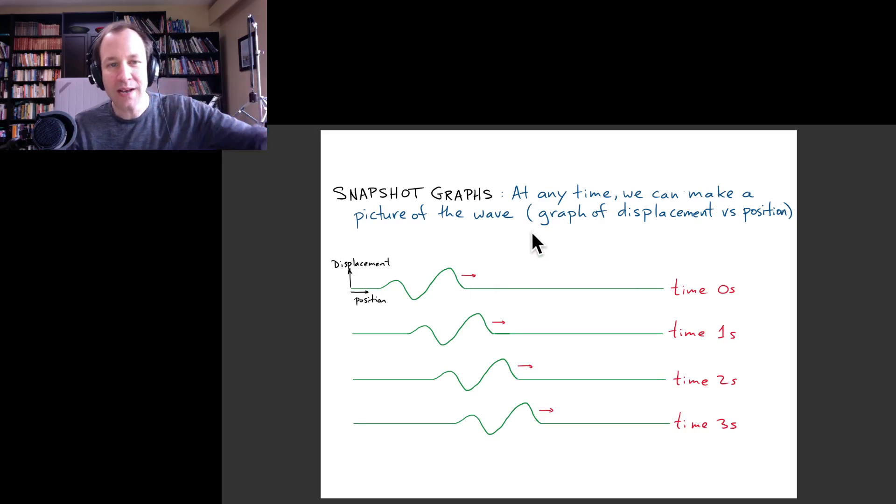But there's one other kind of graph we could make to describe the wave. Maybe instead of trying to represent what the whole wave looks like at one particular time, maybe instead of that, we would be interested in knowing what does just one part of the string, one specific place on the string, what is that doing as a function of time?